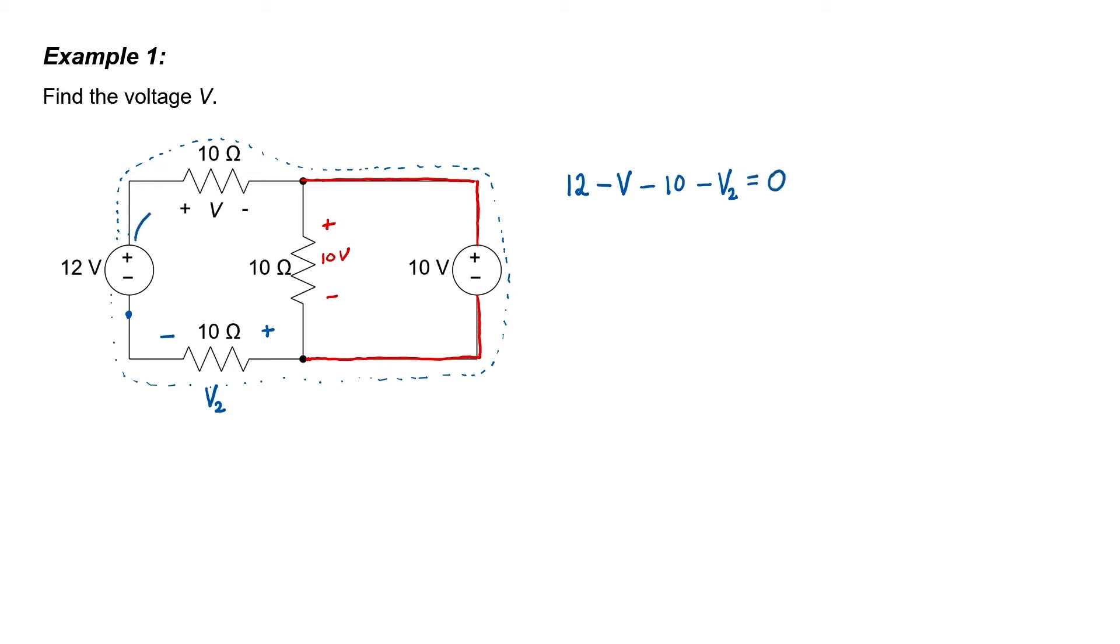Let's say that the current coming out of the 12 volt source is I. That same current has to go through this 10 ohm resistor and that same current has to flow through this 10 ohm resistor. In both cases, current flows from positive to negative. Applying Ohm's law across the top 10 ohm resistor, I can write V equals IR. Applying Ohm's law across the bottom 10 ohm resistor, I can write V2 equals IR.